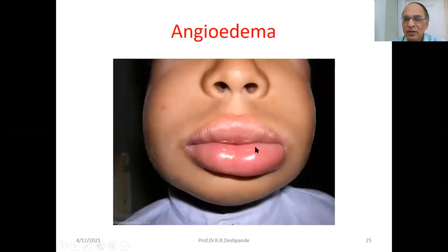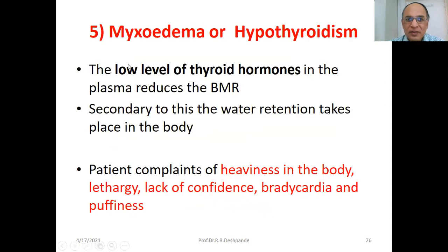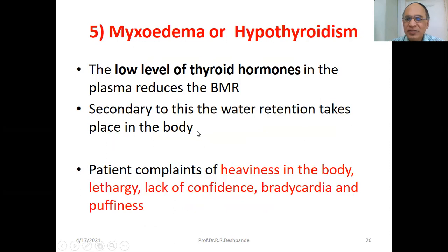Other symptoms of allergic reactions include edema, rash, dyspnea, breathlessness, and hoarseness of voice. Laryngeal edema is a danger sign indicating allergic edema — lips may swell immediately after eating allergens like peanuts or eggs. Myxedema or hypothyroidism results from low levels of T3 and T4, reducing basal metabolic rate. This leads to water retention, and the patient complains of heaviness, lethargy, tiredness, lack of confidence, bradycardia, and puffiness.